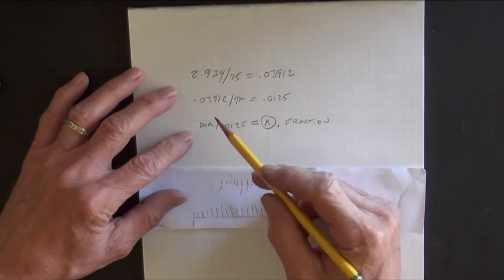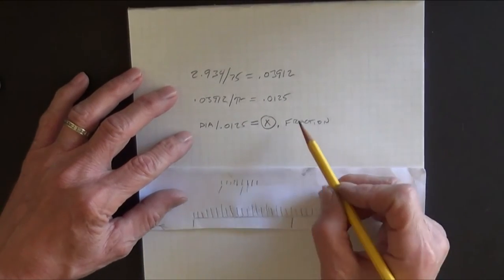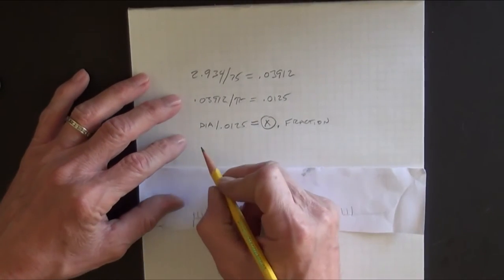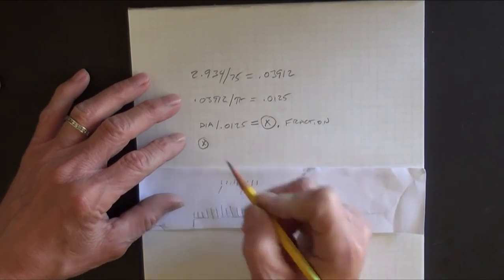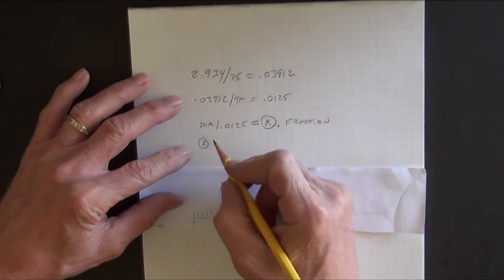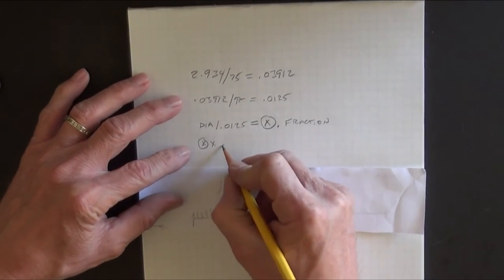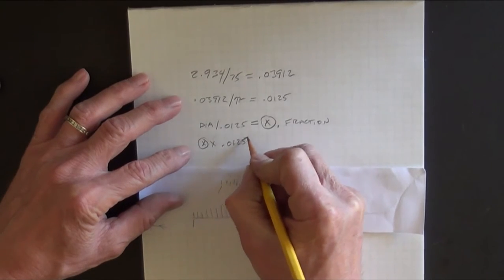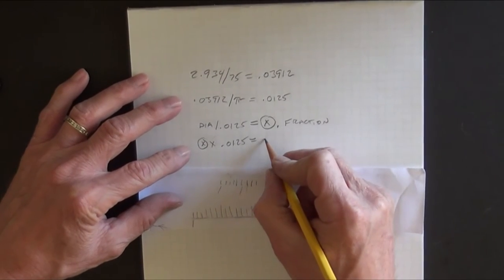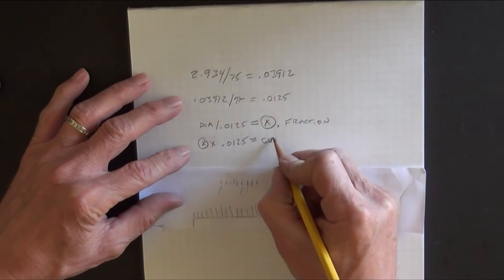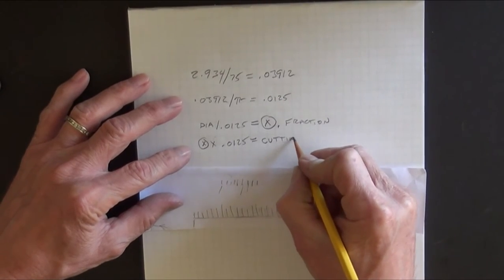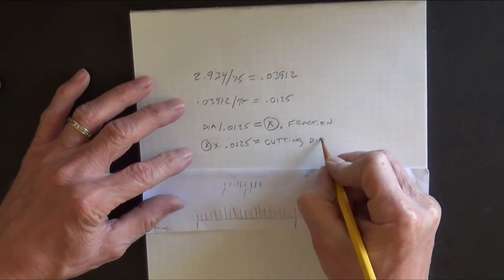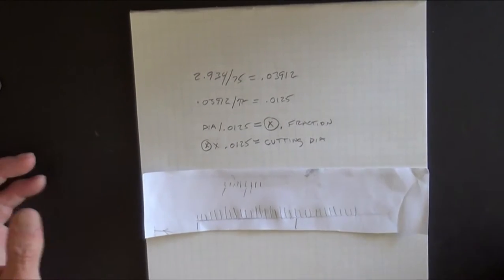Now, you need to make the diameter even, so you drop off the fraction, you take the x, the large digit that there is there, and you multiply that times the magic number, zero, one, two, five. And that's going to give you what diameter you need to cut with, the cutting diameter that you need to turn it down to, and then you know.